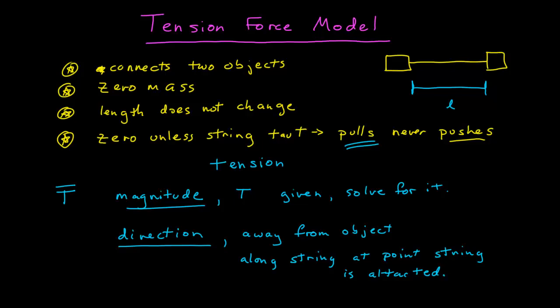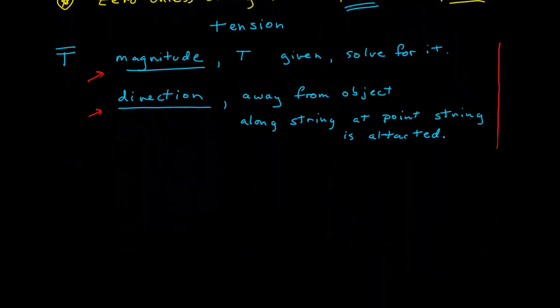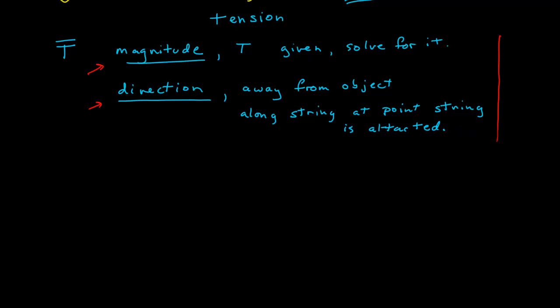Before we go to a couple of examples, what we have here is a model for the tension force — essentially a verbal representation of that model. There isn't an equation or formula that tells us what the tension is going to be in every situation, but that doesn't mean we can't define it physically. This is a verbal definition of what tension is: a force with a magnitude and a direction. For any given problem, we have to take this model and translate the verbal representation into a mathematical one.